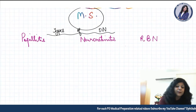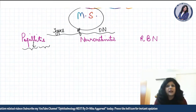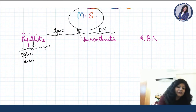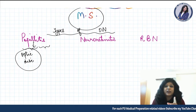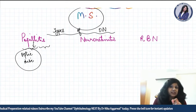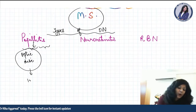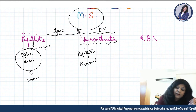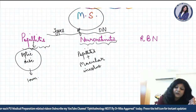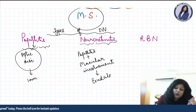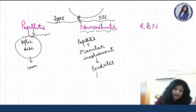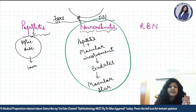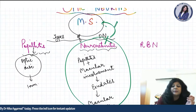Papillitis means inflammation of the papilla — the optic disc or optic nerve head — which is the intraocular part of the optic nerve, just 1 mm. In neuroretinitis, there is not only optic disc inflammation but also macular involvement in the form of exudates, giving a macular star formation. However, neuroretinitis is not found in multiple sclerosis.